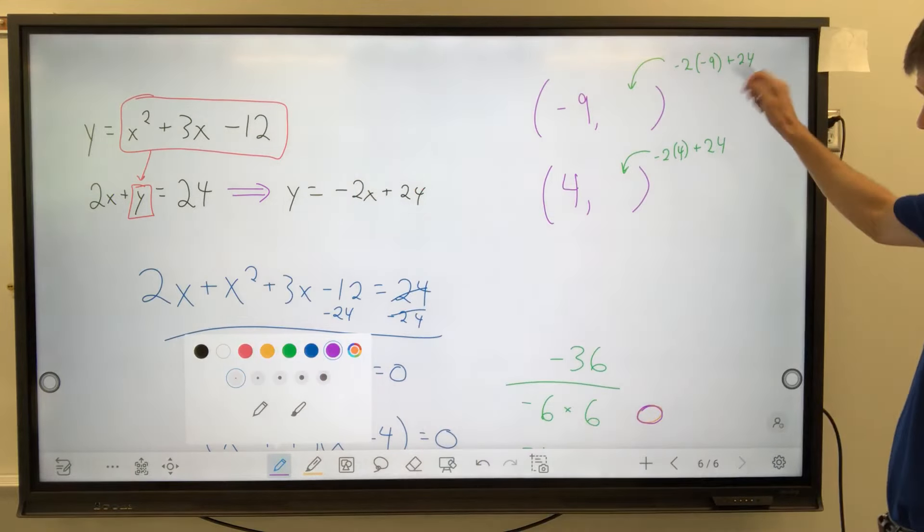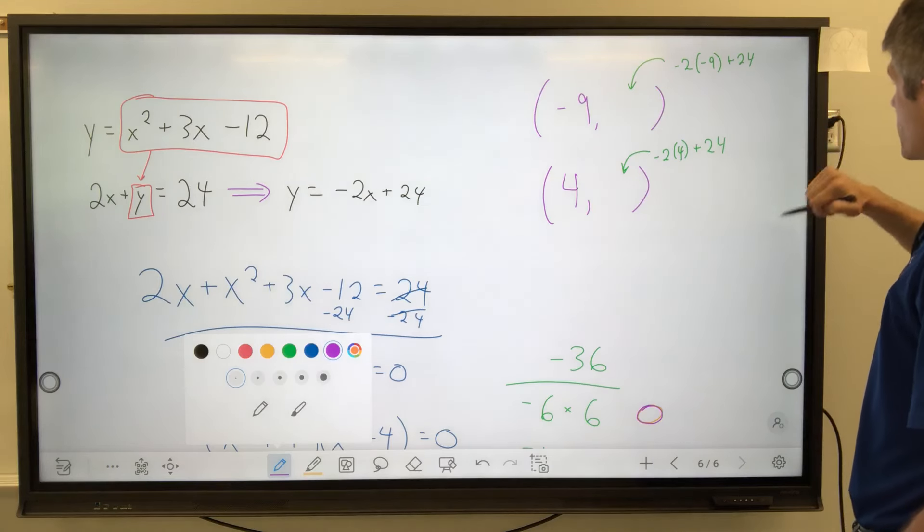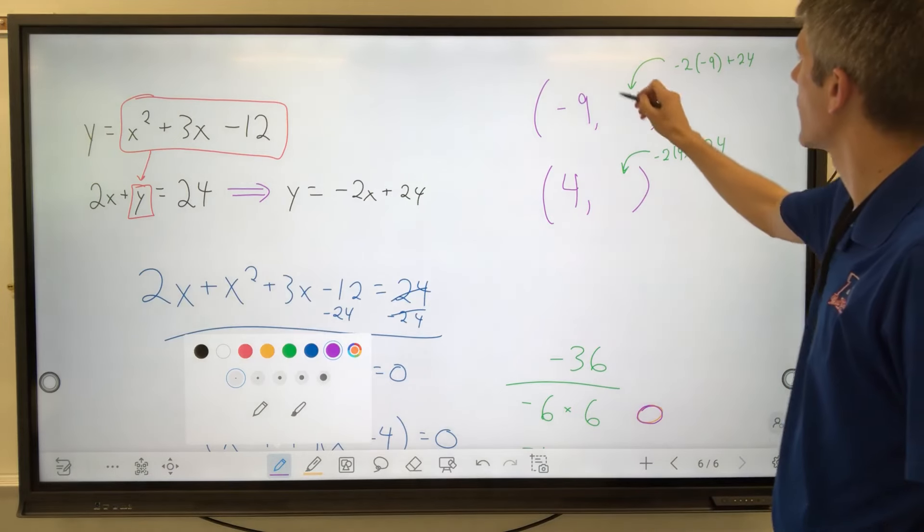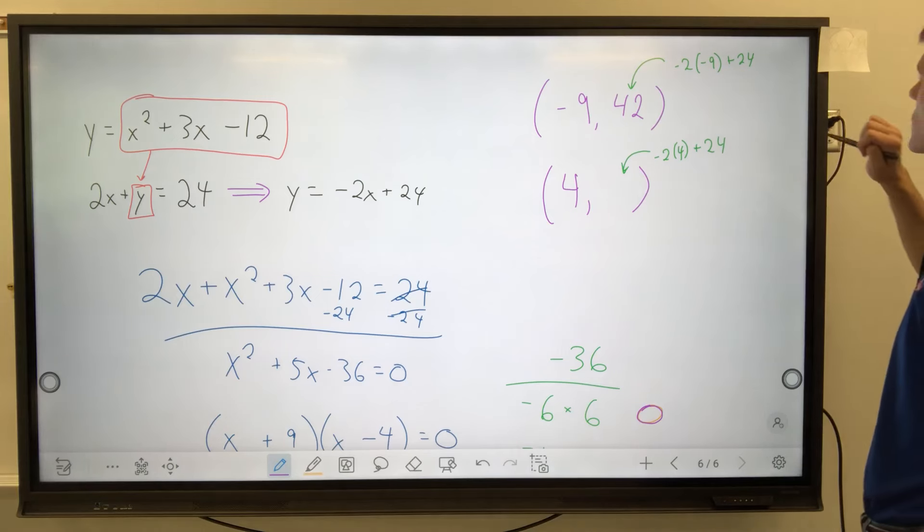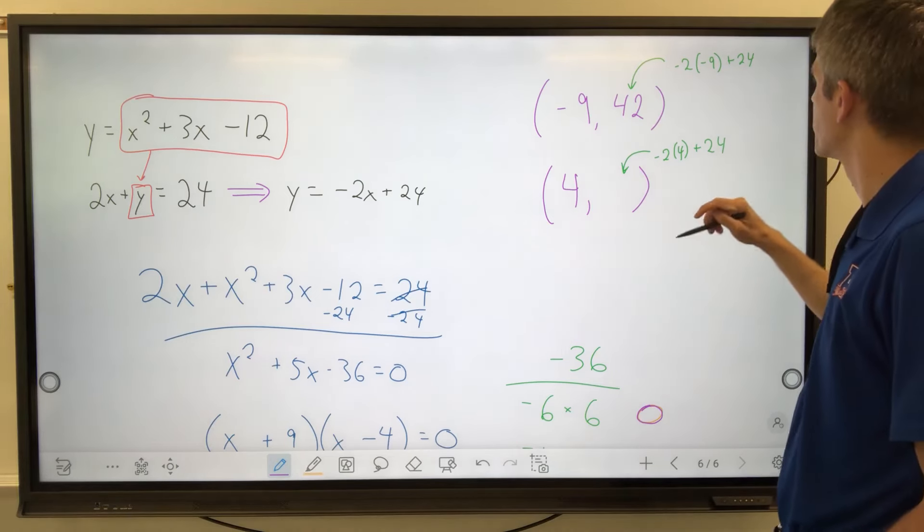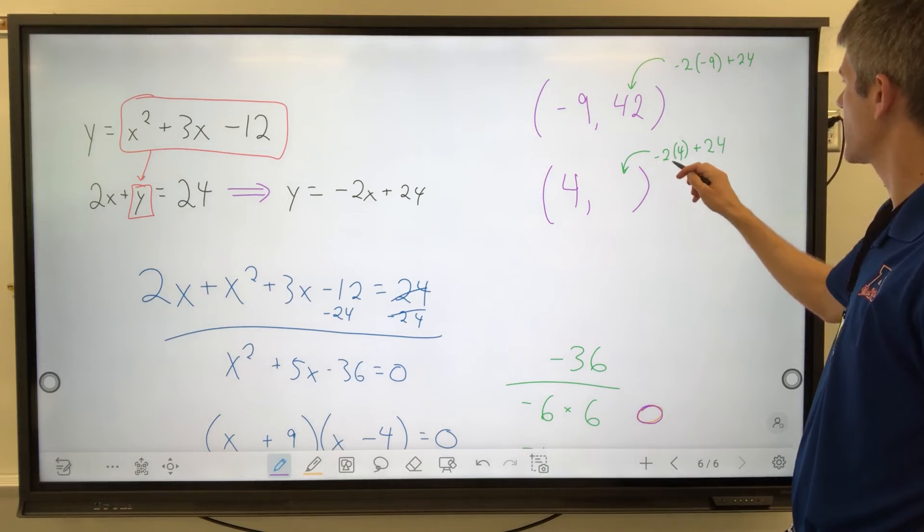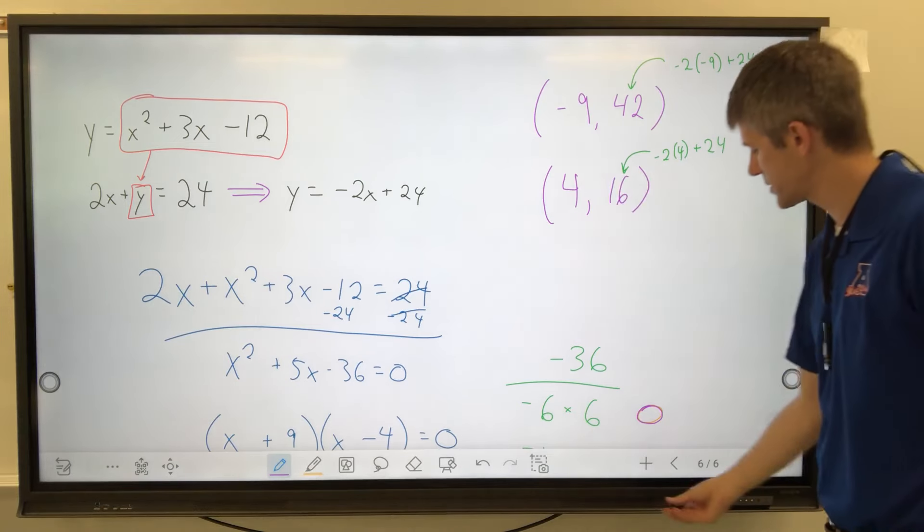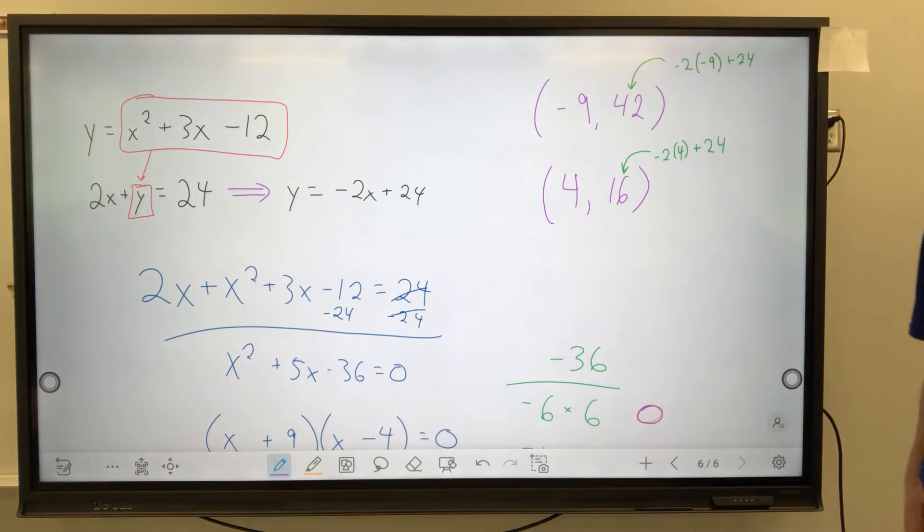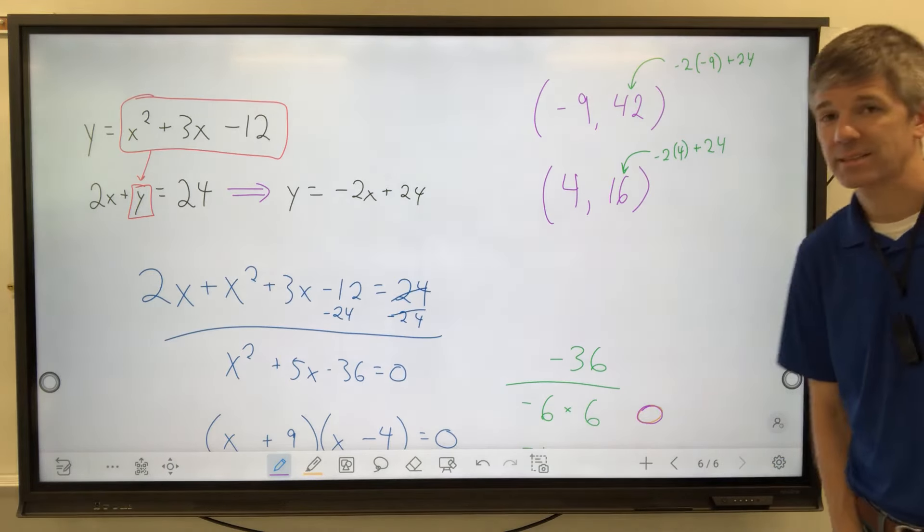Let's figure it out. All right. Negative 2 times negative 9. That would be 18. 18 plus 24 is 42. Yeah. Boy, I sure hope so. I'm going to be embarrassed if it's not. 18, 24. Yep. Uh-huh. That's it. And then that's going to be negative 8 plus 24. That's 16. So, I have two coordinates. Negative 9, 42, and 4, 16.